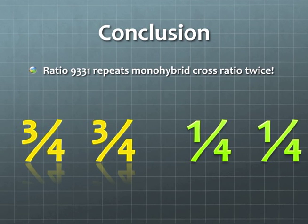So, as you see, the ratio is repeated once in the macro and twice in the micro. As you see, the ratio of the dihybrid cross has a relation with the ratio of the monohybrid cross. Thank you.